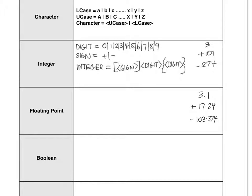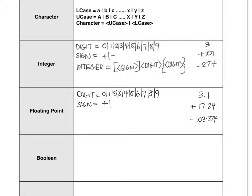Once again, the first thing I need to do is define what a digit is. So as I defined before, digit is defined as 0, 1, 2, 3, 4, 5, 6, 7, 8, or 9 — no need to go further, because they're all just repetition of those numbers. The other thing that a floating point will also have is sign, and sign is defined as plus or minus.